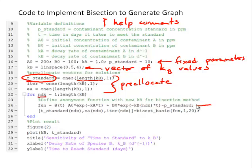Redefine our anonymous function for each value of KB. And then call that function bisect_basic and we will store the results at the index element of T_standard, EA and iter.